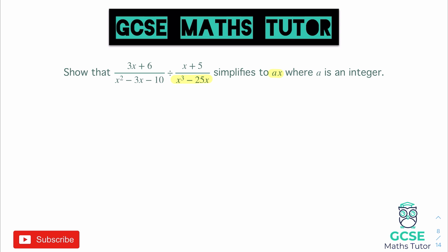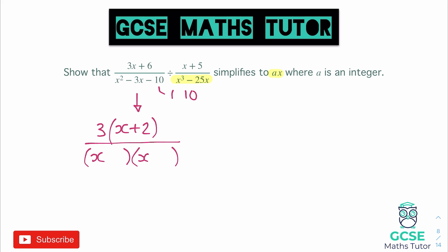For this one we're going to factorise everything. Looking at the first fraction: on the numerator we can factorise 3 out, giving us 3(x+2). On the bottom we have a quadratic — a double bracket with x at the start of both. Our numbers need to multiply to 10 and add to negative 3, so we use 2 and 5: that gives us (x+2)(x-5). We can already see that (x+2) appears on both numerator and denominator, so we can cancel those straight away.